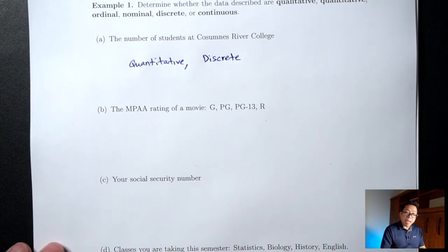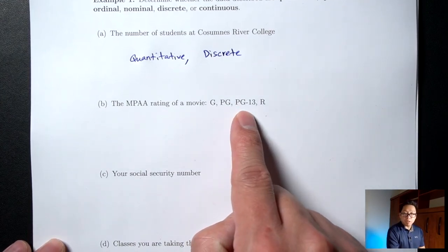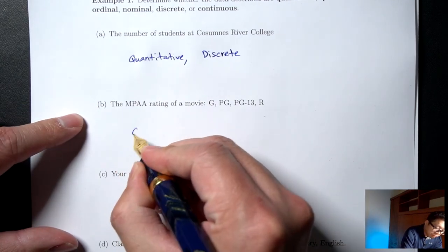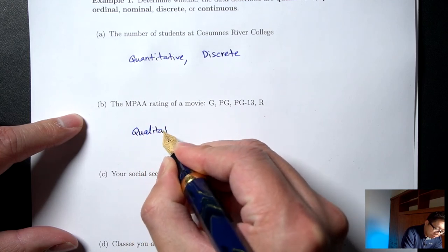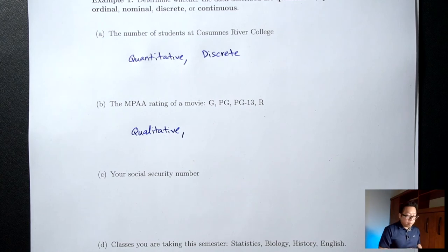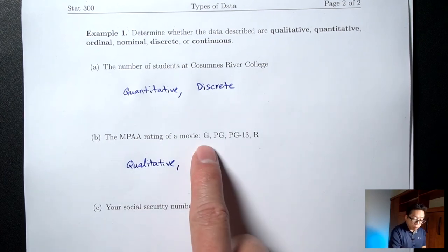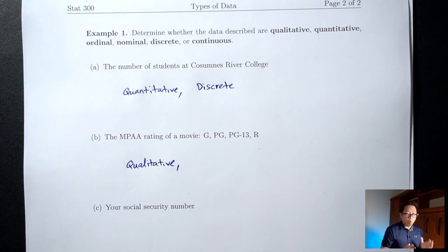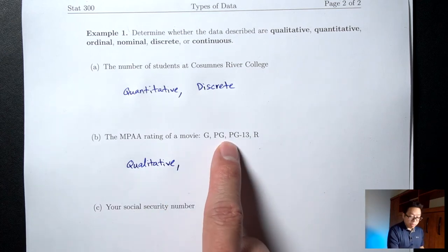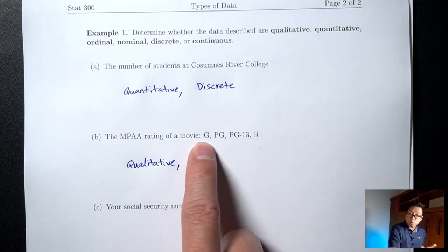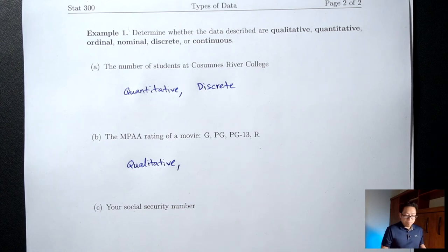Part B: the MPAA rating of a movie — G, PG, PG-13, R. These are words, so this is definitely qualitative. Is there a natural order? Yes — it's already in order from most appropriate for kids to least appropriate. G is most appropriate, R is the least appropriate for kids. There is a natural order that everyone agrees upon, which means this is ordinal.